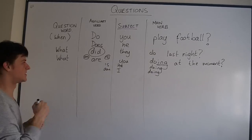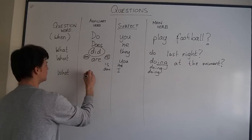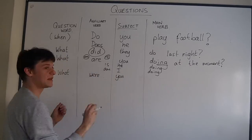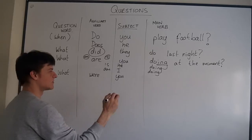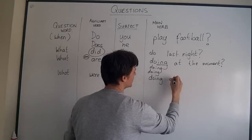Now let's think about past continuous. What were you doing? Were with you, but was with he or she. What was he doing? What was she doing? OK. What were you doing at 10pm last night?